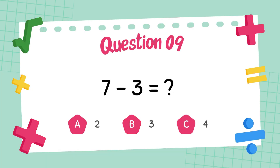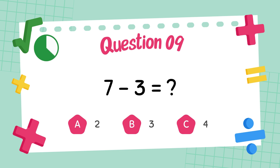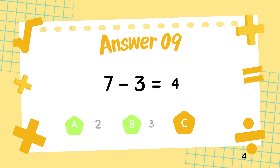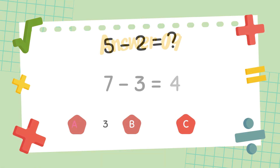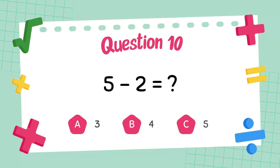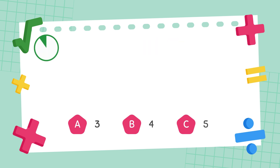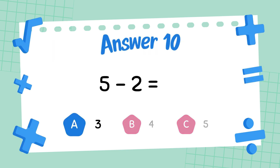What is 7 minus 3? The answer is 3. What is 6 minus 4? The answer is 4.